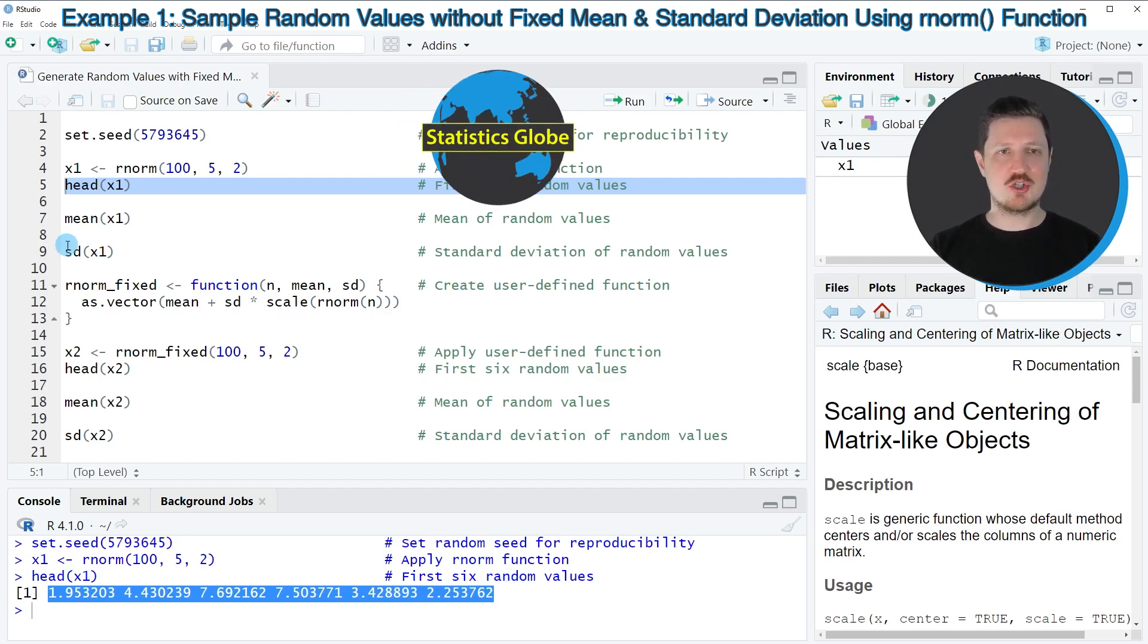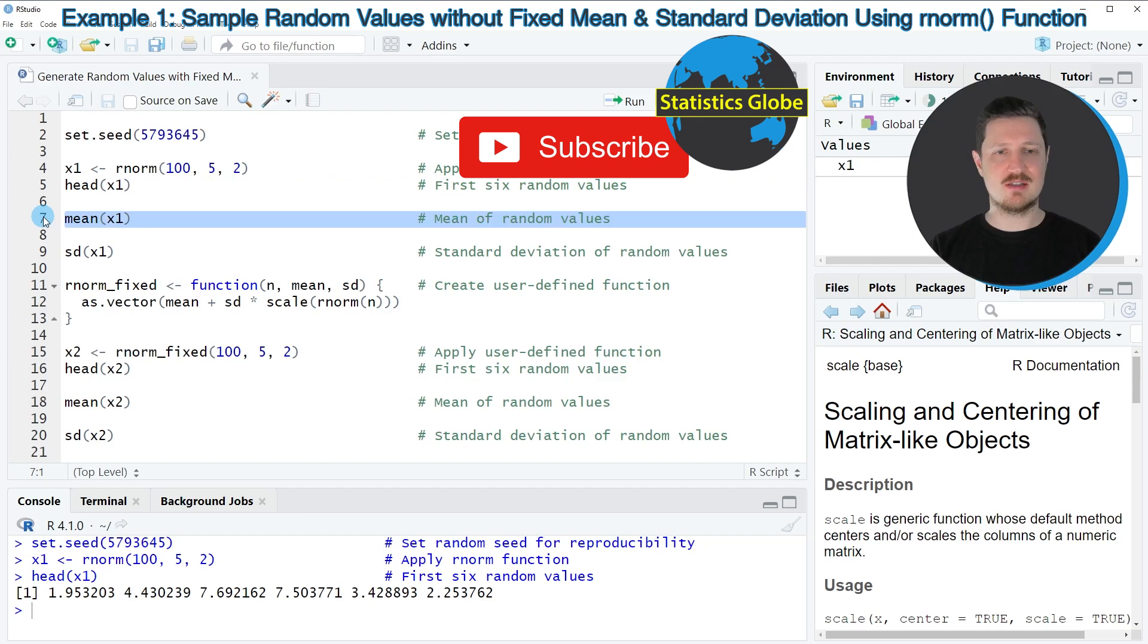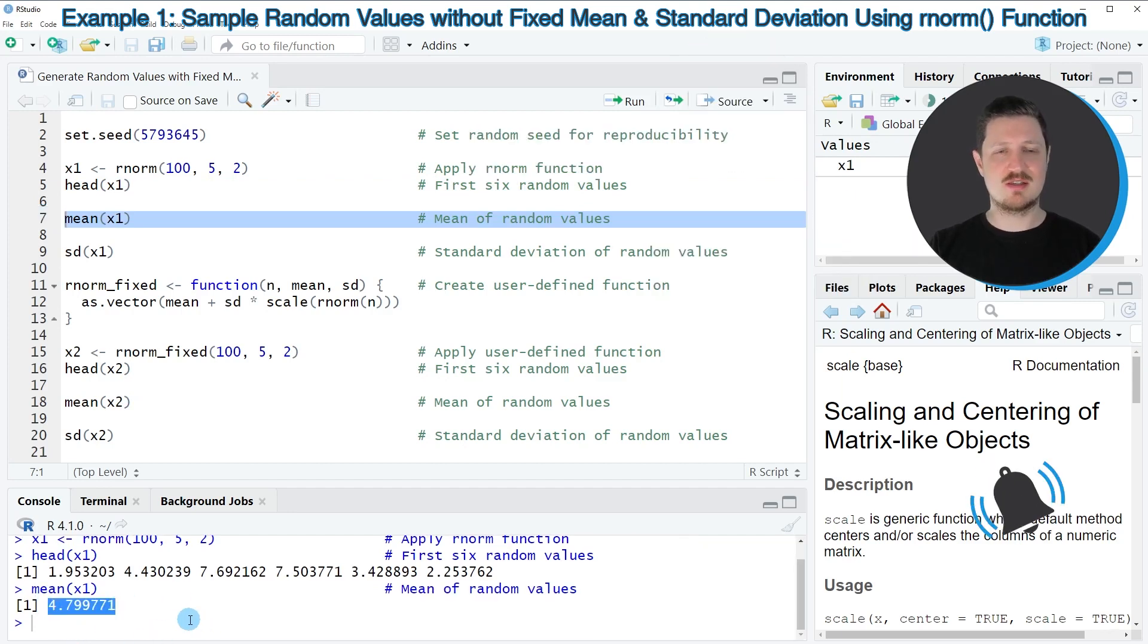However, if we apply the mean function to this vector as you can see in line 7 of the code, you can see that the mean is slightly different compared to our previously specified mean value of 5. Because in this case our mean value is 4.799, and the reason for that is that due to the randomness of the random number generation, the mean value is not perfectly hit. So if we would increase the number of values that we draw from this distribution, then we would get closer and closer to the value 5, but we would probably never hit the exact mean value that we have specified.